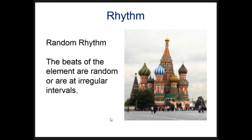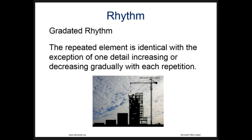Here we see cube house designs in the Netherlands where the roof design, windows, decorations, and colors are repeated each time — that's regular rhythm. Random rhythm: on this same cathedral, even though we have similar shapes on top of the little towers, they're decorated with different shapes and colors, giving a feeling of random or irregular rhythm.